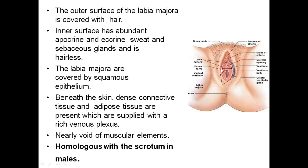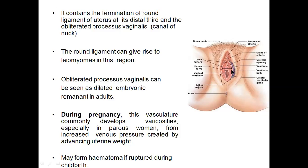The inner surface has abundant apocrine, eccrine sweat and sebaceous glands, and it is hairless. The labia majora are covered by squamous epithelium. Beneath the skin, dense connective tissue and adipose tissue are present, supplied by a rich venous plexus. Muscular elements are essentially absent. It is homologous with the scrotum in males. The labia majora contains the termination of the round ligament of uterus.